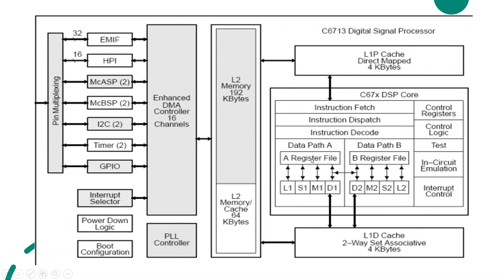The registers are 32-bit general purpose registers. Each register file has 16 registers, giving 32 registers total. One register file is connected to 4 functional units. We call them L1 — for logical operations — S1 for bit manipulation and store operations, M1 for multiplication, and D1 for data transfer. L1 and S1 handle logical and arithmetic operations.